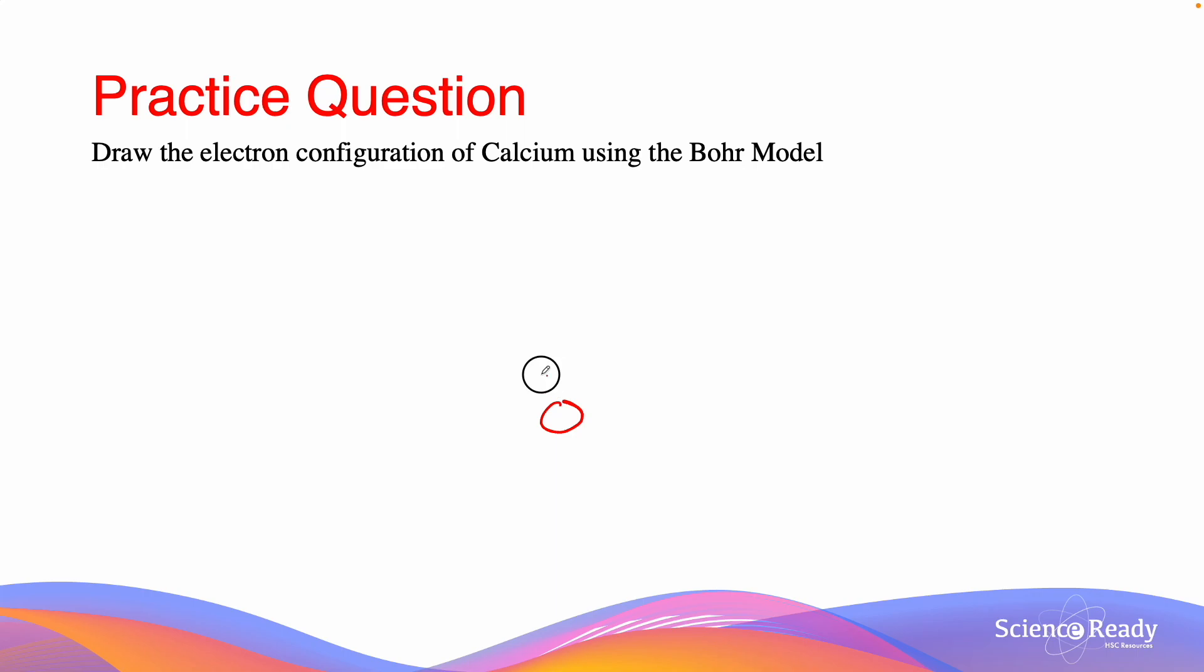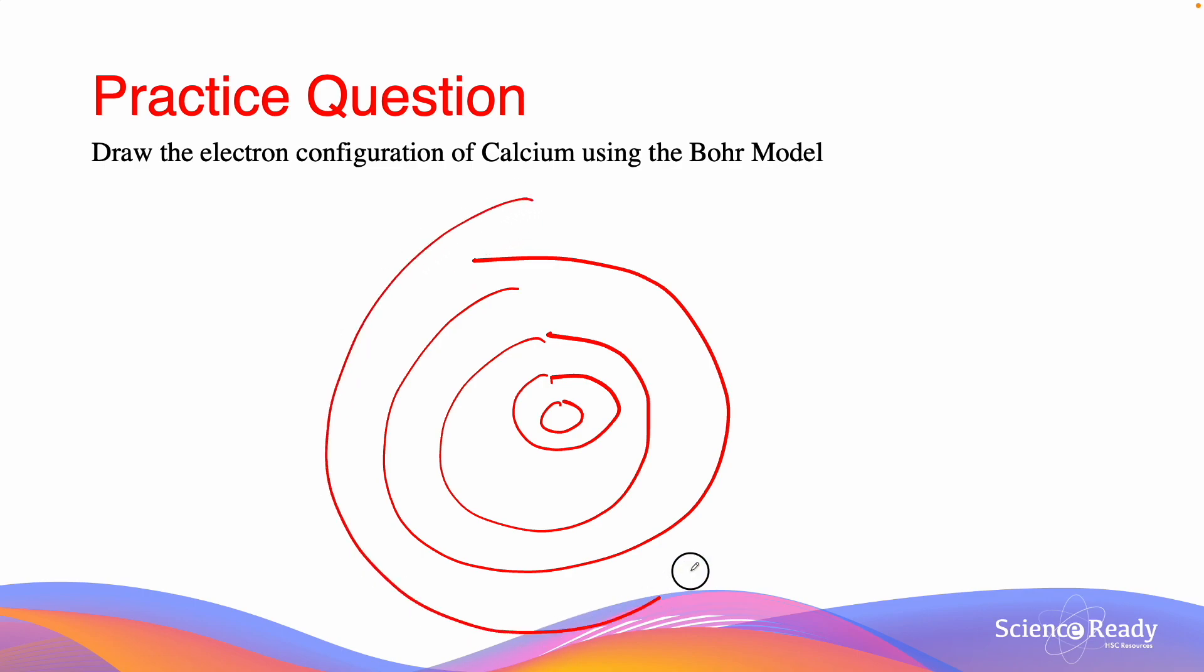So we have the nucleus here, we have the first shell, the second shell, the third shell, and the fourth shell. So we'll go Ca here. The first shell has 2 electrons, and calcium has 20, so we put in 1, 2. Calcium now has 18 remaining electrons.